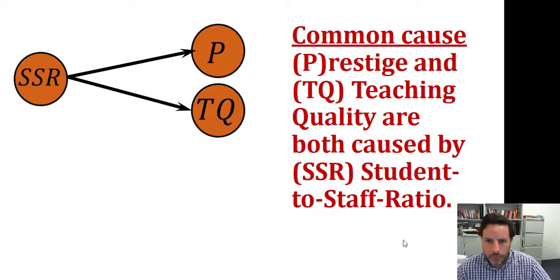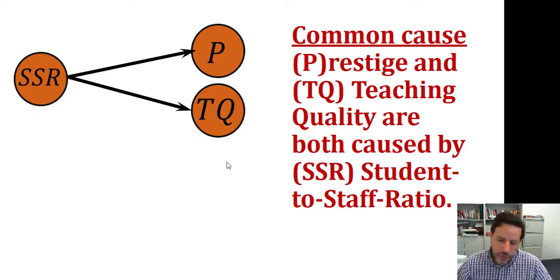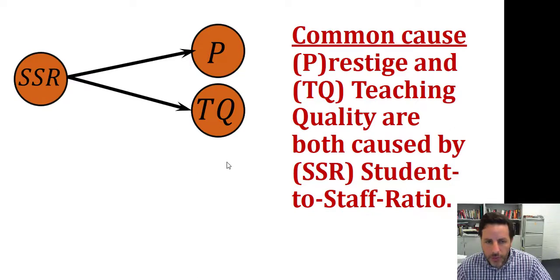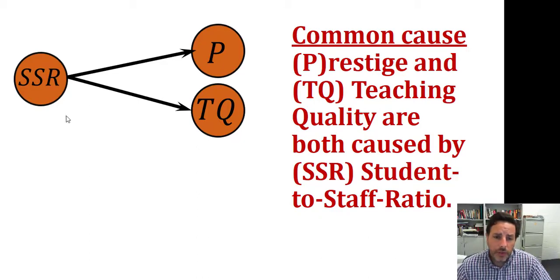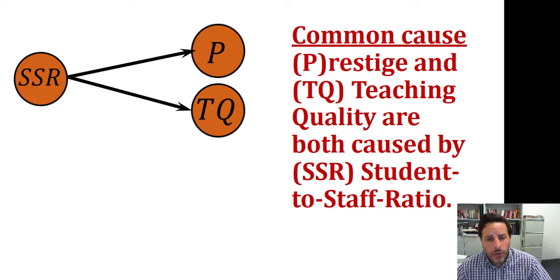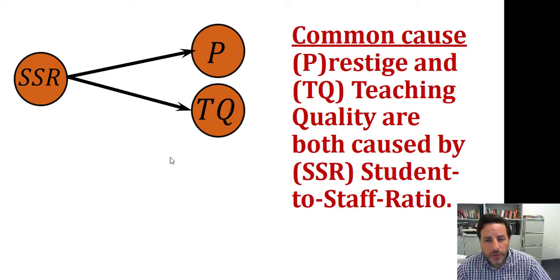Let's give some examples. The color of the nodes changes because now we are talking about measured variables — x and y were abstract or latent variables, but these are measured or observed variables. We've got a study about schools: SSR is the student-to-staff ratio, P is the prestige of the school, and TQ is the teaching quality. Let's say we find an association between P and TQ.